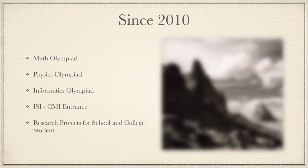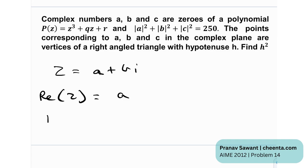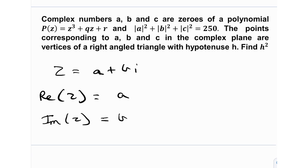Before we dive in, let me give a brief introduction to complex numbers. Any complex number z can be represented as a + bi, where a and b are real numbers. The real part of z is a — the purely real part — and the imaginary part is b. The complex number is the sum of its real and imaginary components, so a + bi is the general representation of any complex number.